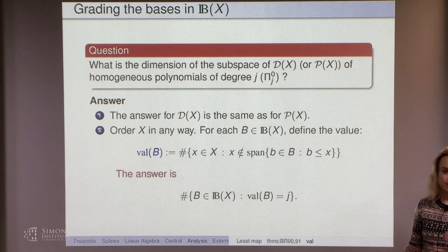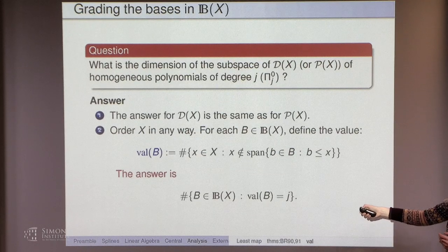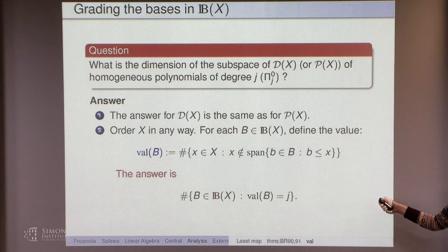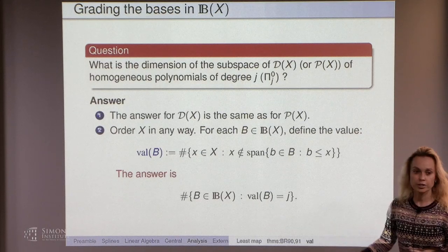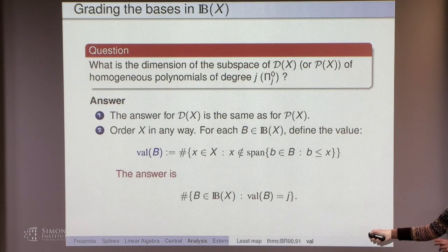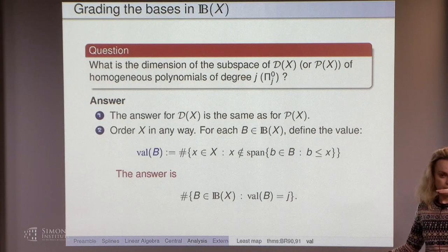There is a so-called valuation function that will do the counting job for you. The answers are the same for P as for D because of the nature of duality — there is a bilinear form that takes arguments from P and D, and this bilinear form respects homogeneity. Because of that, all the homogeneous dimensions of P are the same as the homogeneous dimensions of D. The valuation function looks at all vectors x and checks whether x is in the span of the basis vectors from a given basis b that precede x. If this condition is met, you count it in.